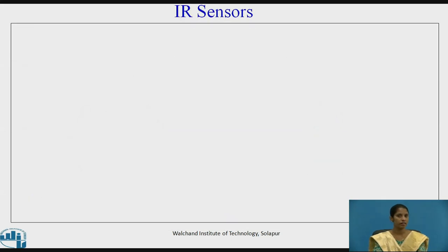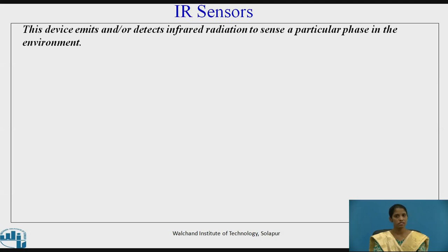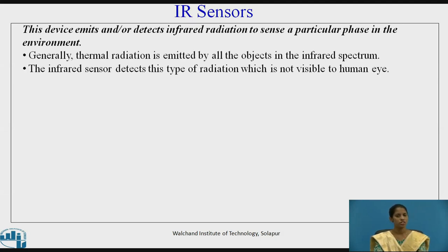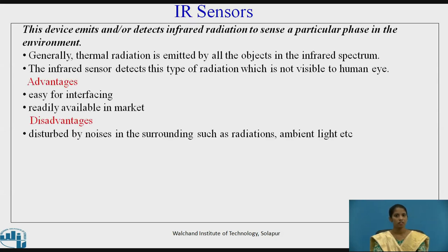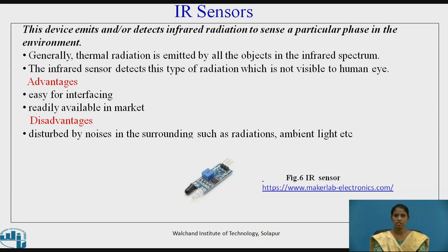The next type of sensor is the infrared sensor. This device emits and detects infrared radiation to sense a particular phase in the environment. Generally, thermal radiation is emitted by all objects in the infrared spectrum, and the infrared sensor detects this type of radiation, which is not visible to the human eye. The advantages are that they are easy to interface and readily available in the market. The disadvantages are that they get disturbed by noise in the surroundings, such as other radiations and ambient light. Figure 6 shows an infrared sensor.